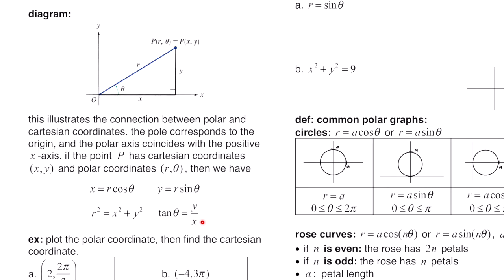We have the following equations relating x, y, and r. Using SOHCAHTOA, cosine of theta equals adjacent over hypotenuse, so x over r, giving us x = r·cosθ. Similarly, sine of theta equals opposite over hypotenuse, y over r, giving y = r·sinθ. Using the Pythagorean theorem on this right triangle: x² + y² = r². And tangent of theta equals opposite over adjacent, so tanθ = y/x.